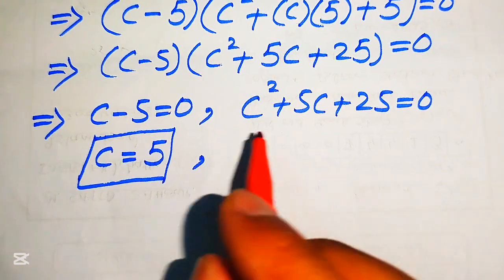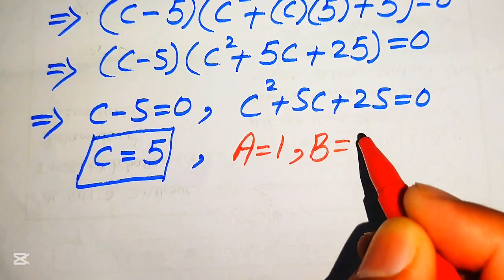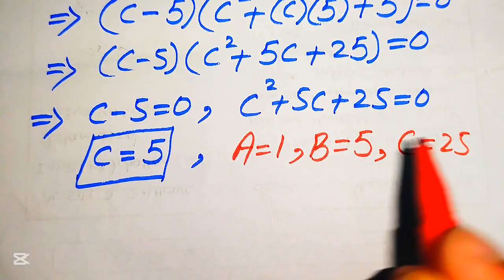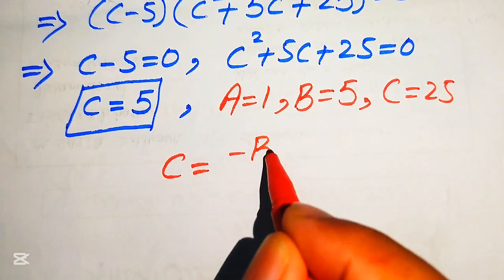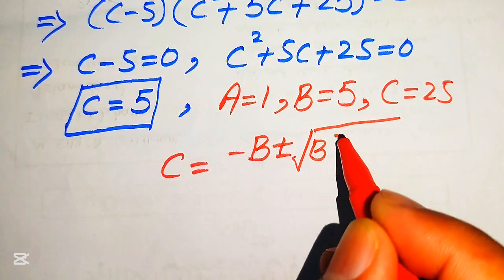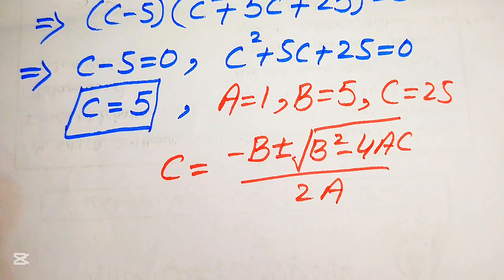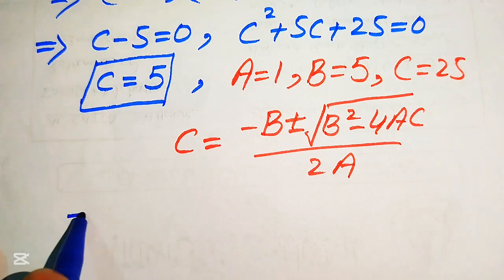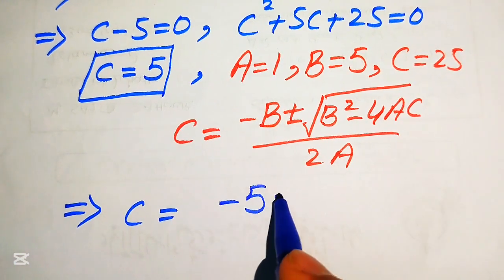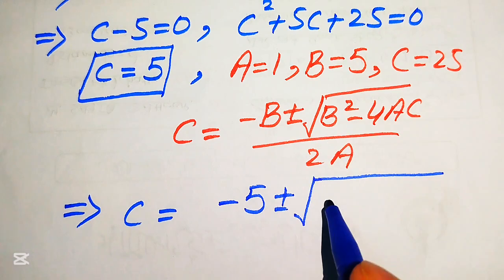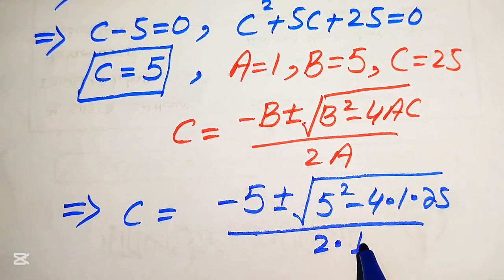We write the coefficients of this quadratic equation: capital A equals 1, capital B equals 5, and capital C equals 25. We state the quadratic formula: c equals minus B plus or minus the square root of B squared minus 4AC, divided by 2A. Substituting the values, this becomes minus 5 plus or minus the square root of 5 squared minus 4 times 1 times 25, divided by 2 times 1.